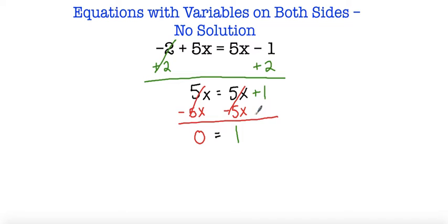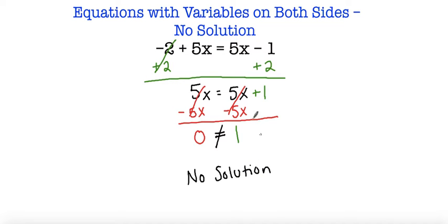So now I end up with 0 equals 1, and we know that's absolutely not true. 0 will not equal 1 no matter how many times you try to make it equal. So 0 is not equal to 1, meaning we have no solution — because there's no number we could substitute for x that would make this equation true. No matter what number we substitute for x, we'll never get these two expressions equivalent to each other. So there's no solution.